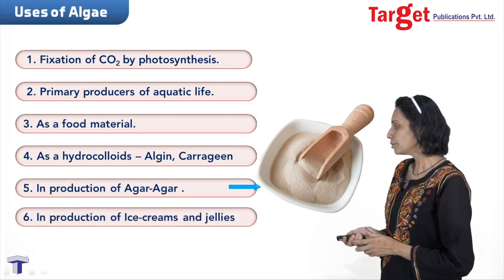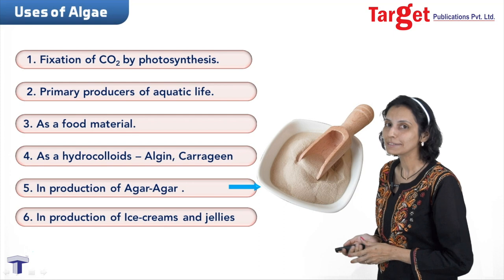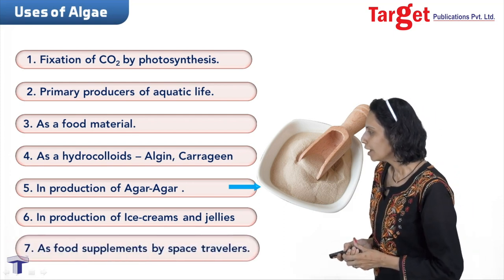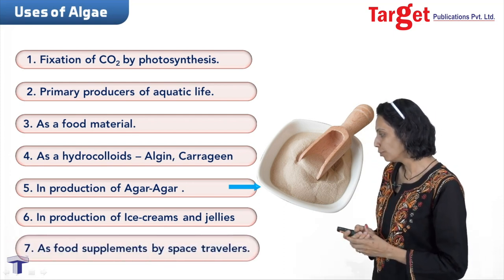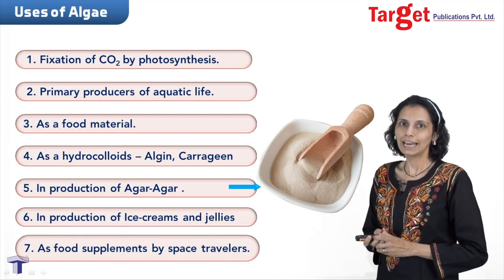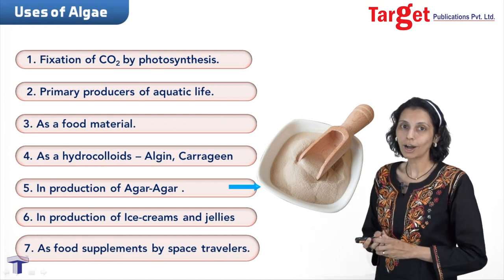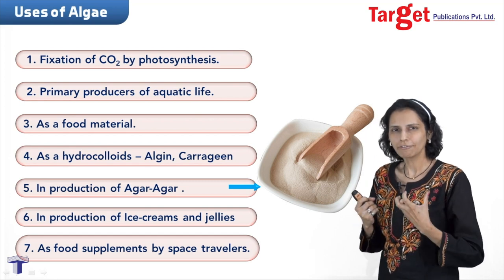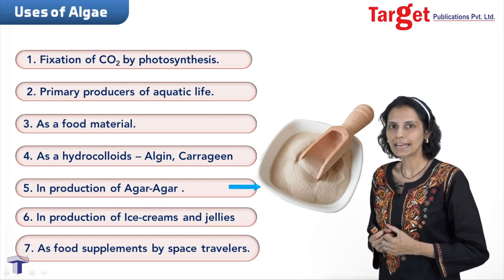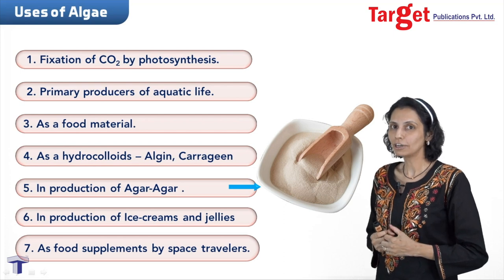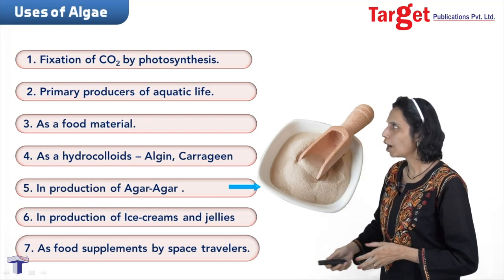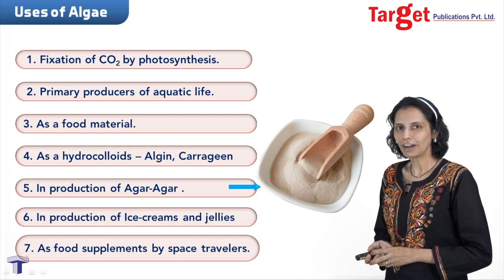Agar agar is also used in ice creams and jellies as food for space travelers. Some algae like Spirulina and Chlorella, which are very rich in proteins, act as food for space travelers. These are all the uses of algae.